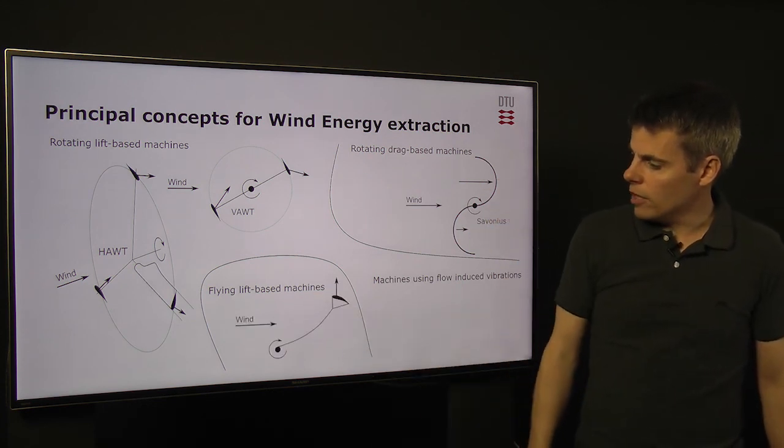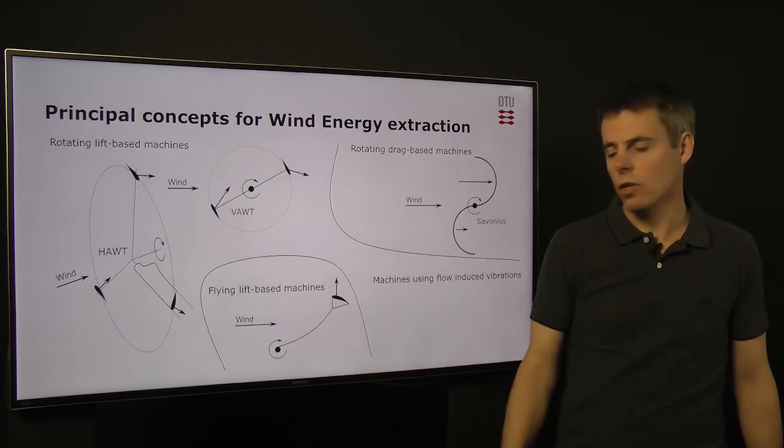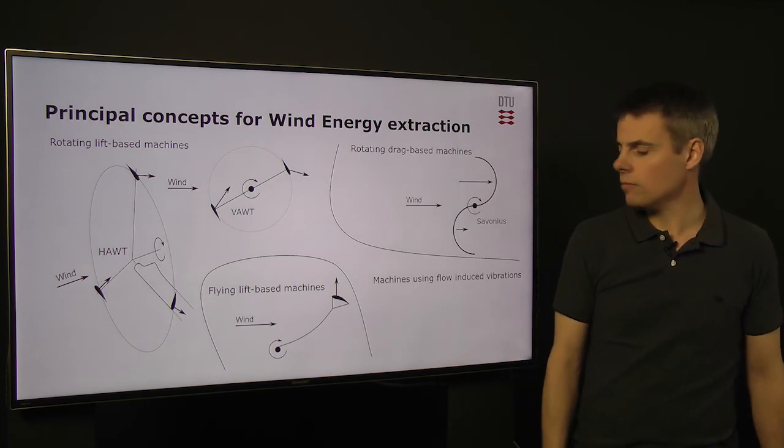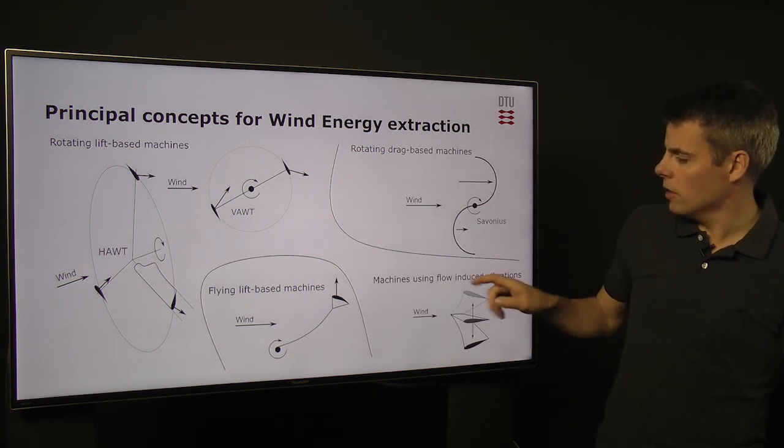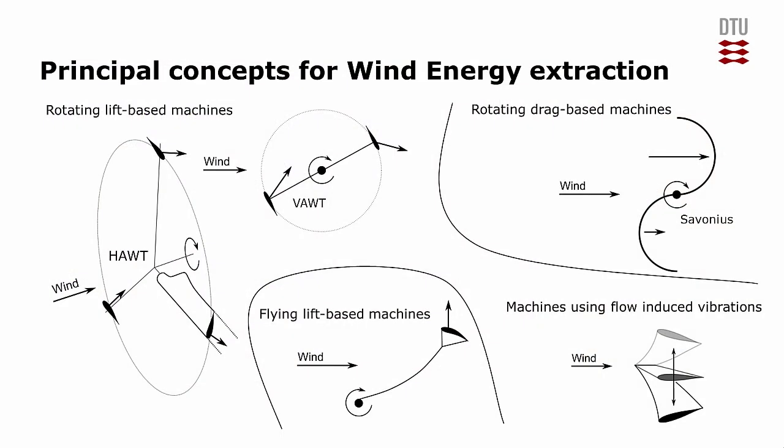The flying lift-based machines, one of them is the kite that pulls a cable that then pulls a generator that is mounted on the ground. And the last one, the machines that are using flow-induced vibrations, is the last category. We'll have a closer look at each of these categories and give some examples in the next couple of slides.